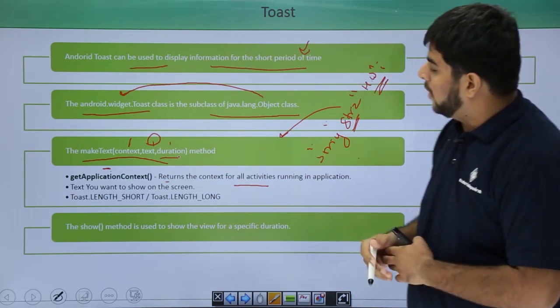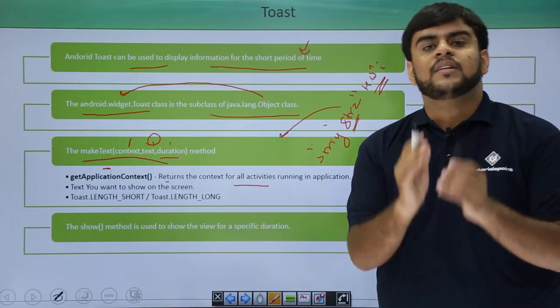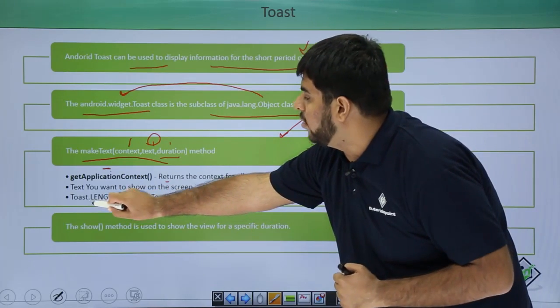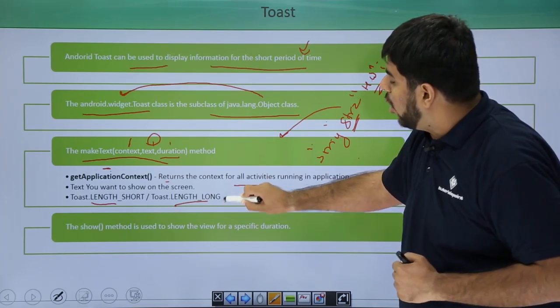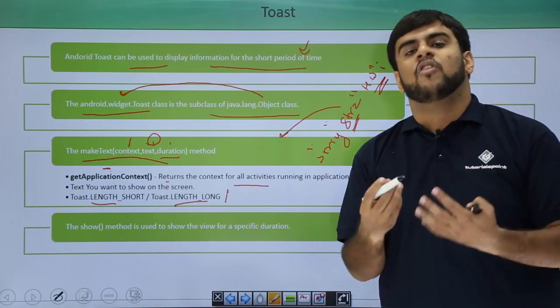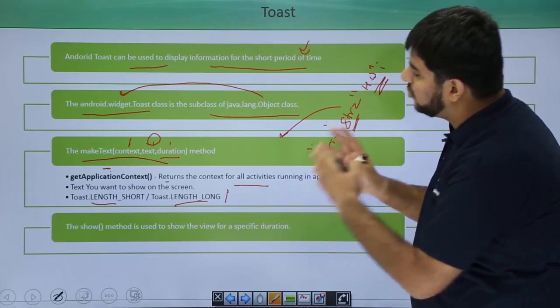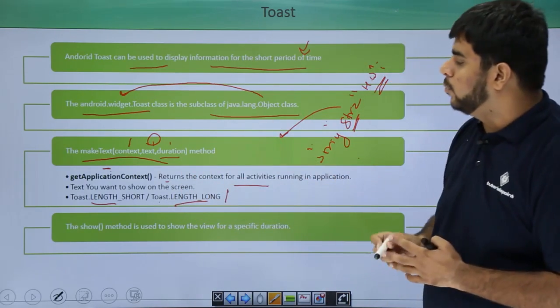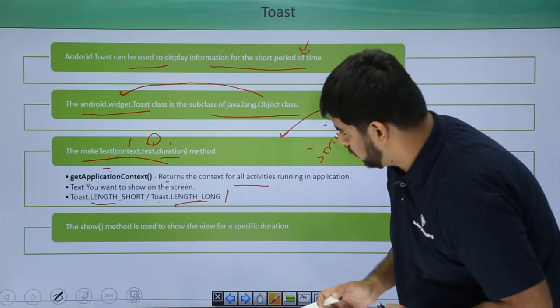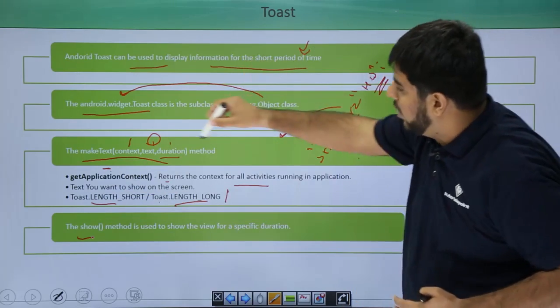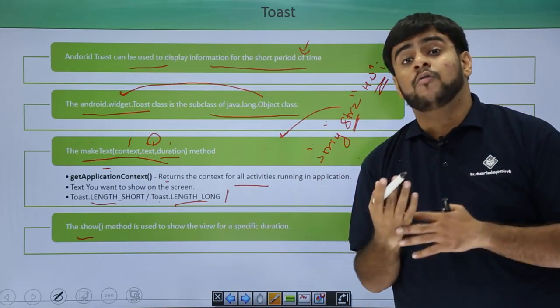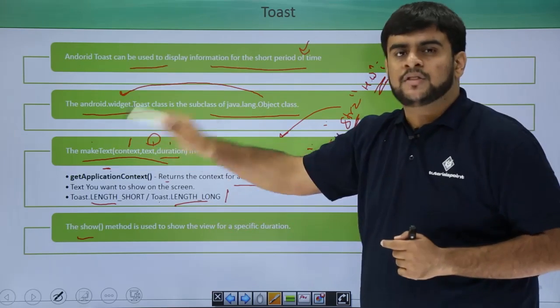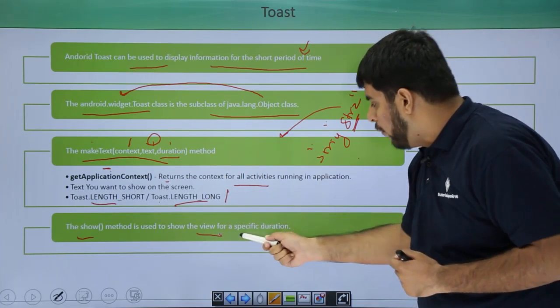Now, the third and last parameter is duration. What is duration? Duration is something that is shown to the user for how much time. By default, we have two durations: length_long and length_short. Since you can clearly observe that these things are in capital, they mean that they are constants that have been predefined by the android library. We have these two durations and we generally show the toast for these durations only. They come from the toast class which has these two static constants. Now, the last is the show. Whatever we have created till now in this method has to be shown to the user. We show this to the user using the show method which is called on this toast and will show this view for a particular amount of time.